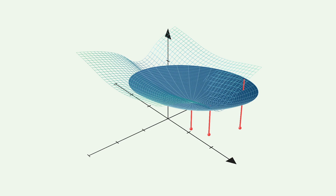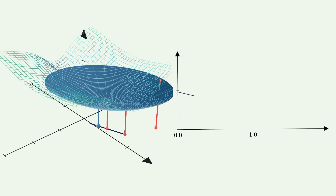For the line search we think about a line originating from the current point and passing the minimum. Our goal is to select the new point somewhere on this line. The distance between the selected next point and the current point is often called the step size. If we plot the function value at a given distance on this line we arrive at a one-dimensional function. The x-axis is the step size and the y-axis is the function value at this step size.